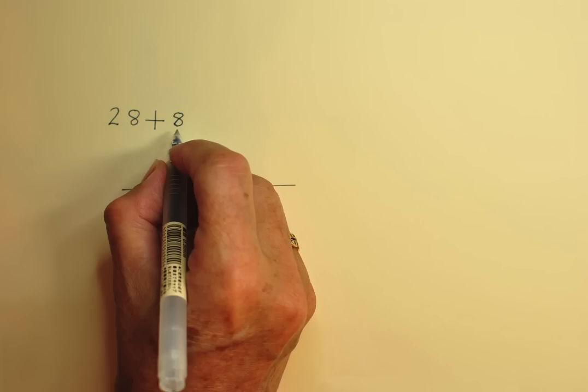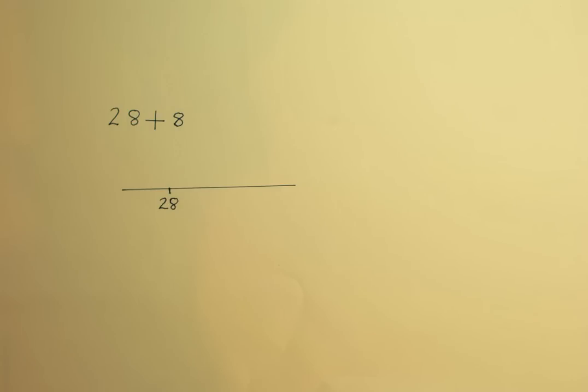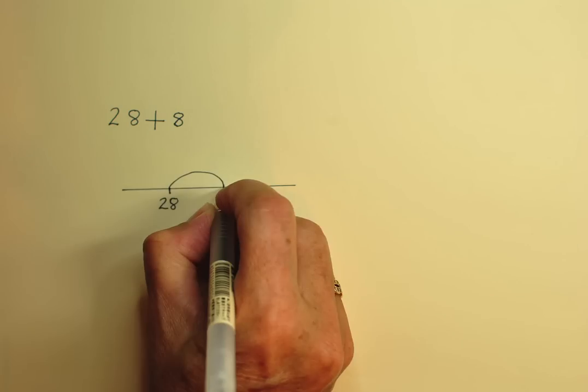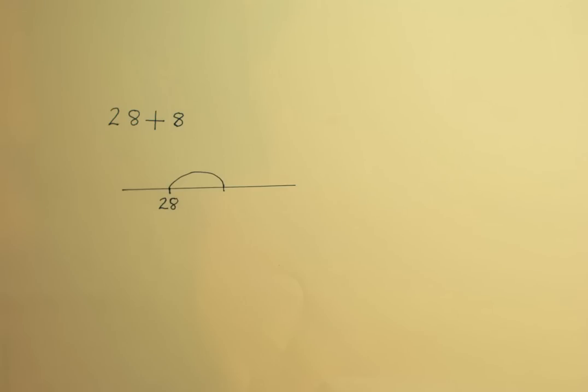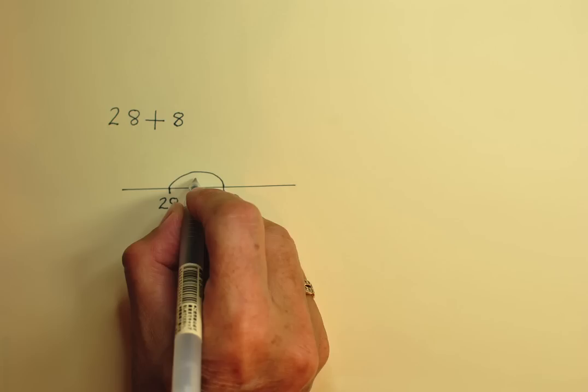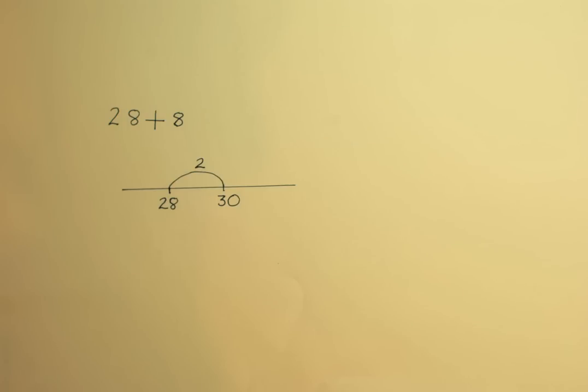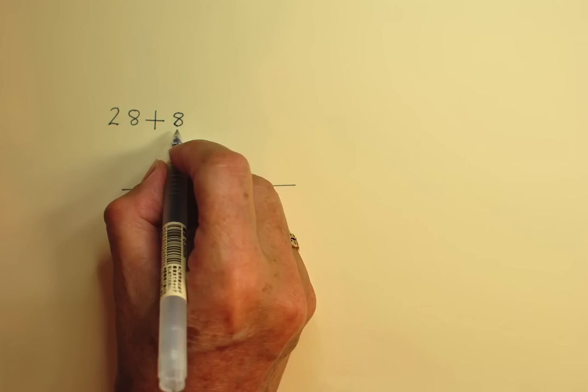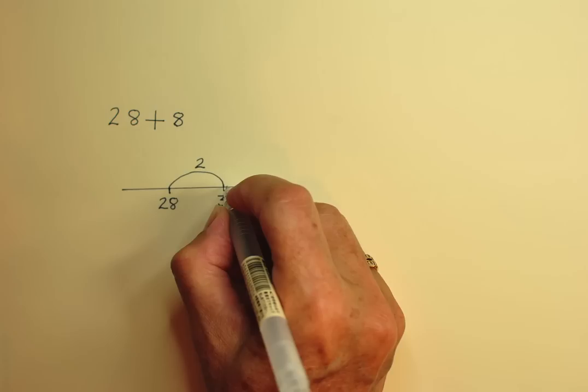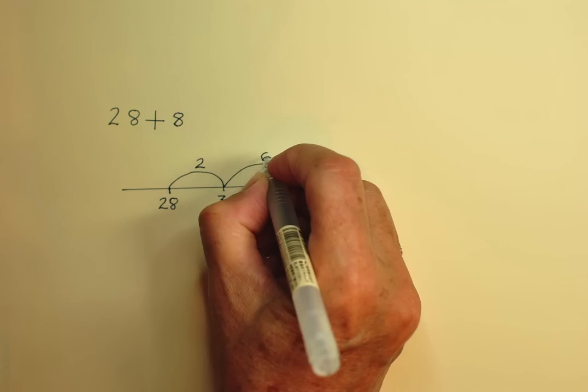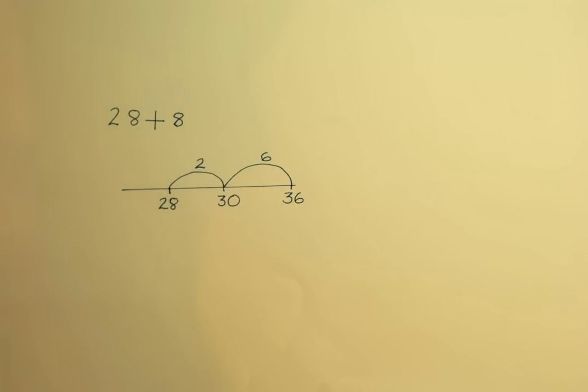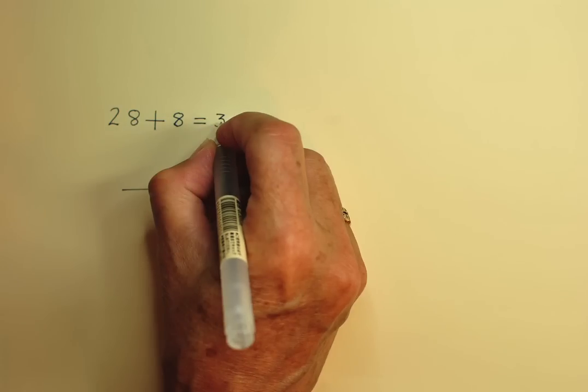The question directs me to add 8, and I know this will take me beyond the next decade boundary, because I know the complement facts, so I am going to use the bridging strategy to solve this addition. Here's my bridge, which is just a jump along the line to the next 10, or the next multiple of 10, which I know to be 30 in this case. I label the size of the jump, either above or inside the arc that I've drawn. Now, the question asks me to add 8, and I've added 2 so far, so I still have another 6 to add. 6 more than 30 is 36, so the answer to the question 28 plus 8 is 36.